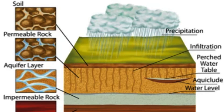Understanding the differences between porosity and permeability is important in hydrogeology because it affects the movement of groundwater through the subsurface. Highly permeable rocks and sediments allow water to flow more easily, while low permeability rocks and sediments can act as barriers to the movement of groundwater. This information is important for predicting the movement of groundwater and for managing water resources.